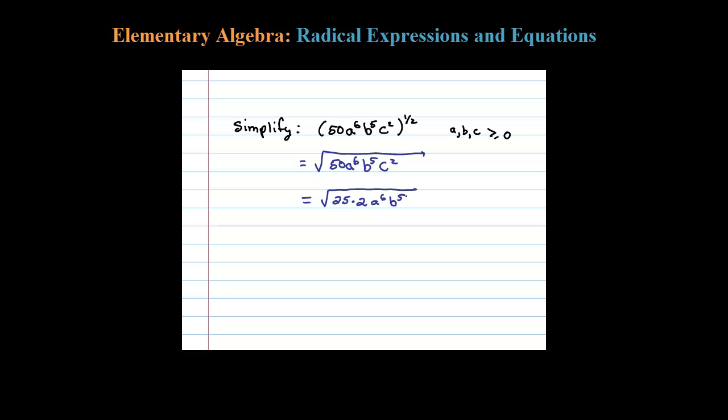a to the 6th, b to the 5th, c squared. And I did that so square root of 25 is just 5, and notice there, 2 is going to be left behind inside the square root.